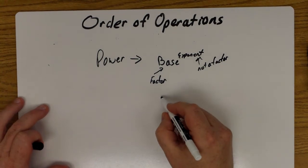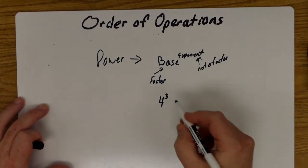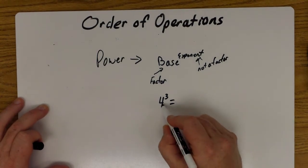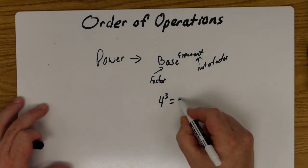An example there would be four to the third power. Four to the third power means take four, the base number, as a factor